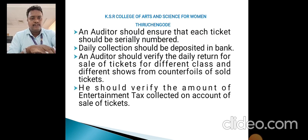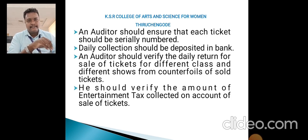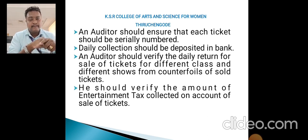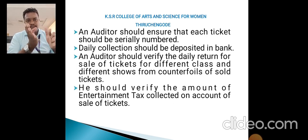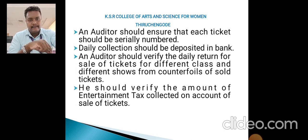The auditor should ensure each ticket carries a serial number, because some theatre employees may engage in misconduct — such as issuing dummy numbers and collecting amounts not entered in the accounts. The daily collection should be deposited in the bank. The auditor should verify daily returns for ticket sales across different classes — first class, second class — and ensure the amounts match. The auditor should also verify the entertainment tax collected on account of ticket sales.